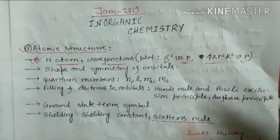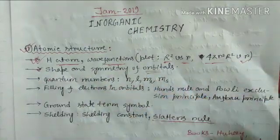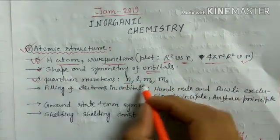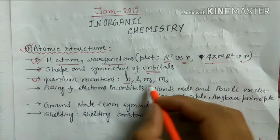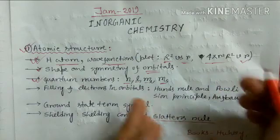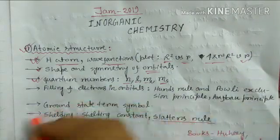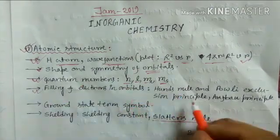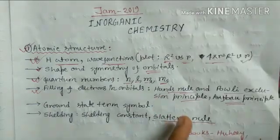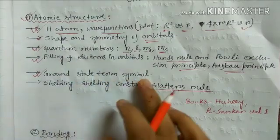You have to practice those plots, then the shape and symmetry of s, p, and d orbitals. The four quantum numbers — principal quantum number n, azimuthal quantum number l, magnetic quantum number ml, and spin quantum number ms — and their allowed values. Then the filling of electrons in orbitals: Hund's rule, Pauli exclusion principle, and Aufbau principle. After that, the determination of the ground state term symbol is very important.